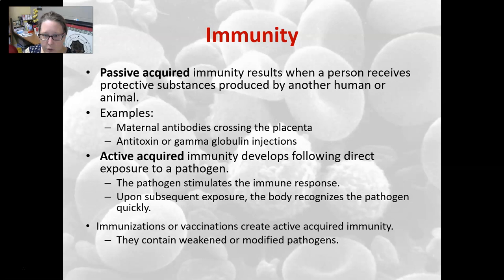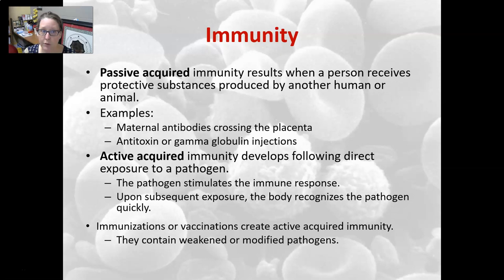Passively acquired immunity is when a person receives already-formed antibodies produced by another human or animal. Examples include maternal antibodies crossing the placenta or found in breast milk, and antitoxin or immunoglobulin injections — such as antitoxin treatment for a snakebite, where antibodies collected from another person are infused into the bite victim.